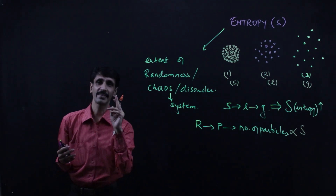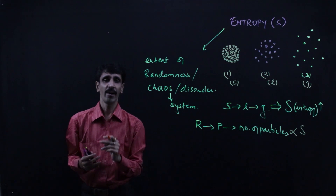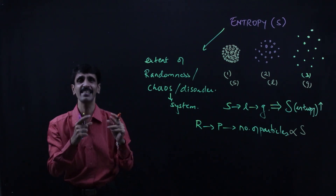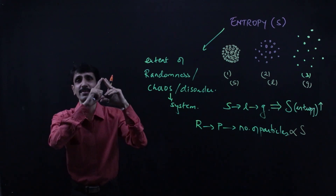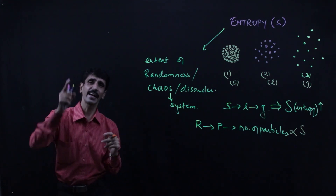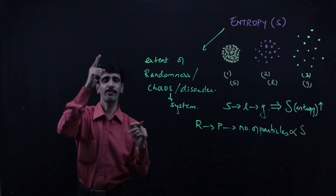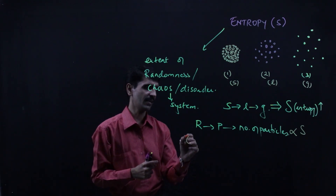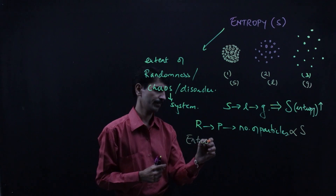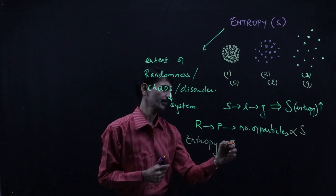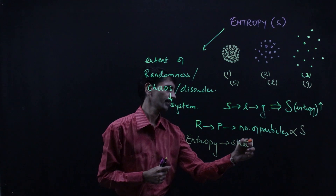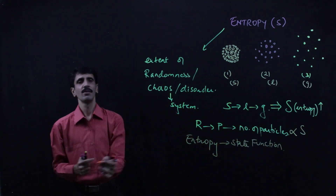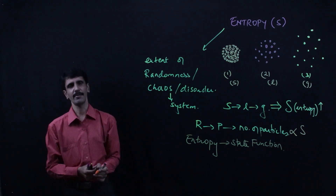If entropy changes, that change is given by the symbol delta (Δ). Delta is also a symbol of a state function, and therefore we say that entropy is a state function. So entropy is a state function.